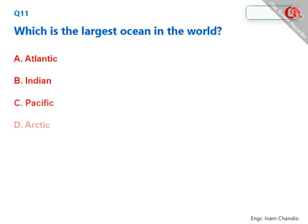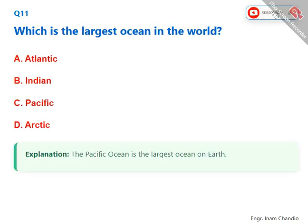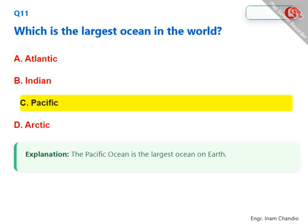Which is the largest ocean in the world? The Pacific Ocean is the largest ocean on Earth. The correct answer is C. Pacific.